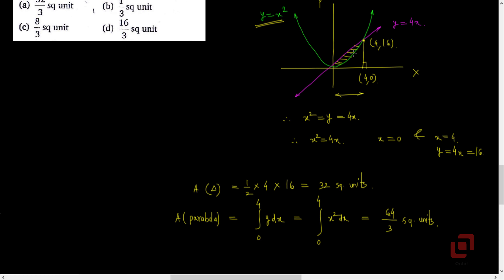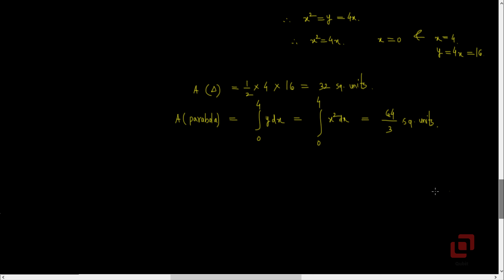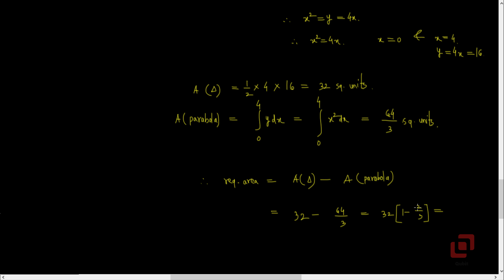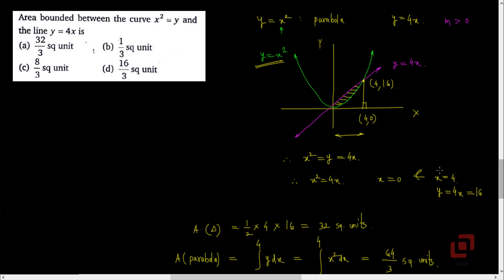The shaded required area is the area of the triangle minus the area bounded by the parabola. Therefore required area equals 32 minus 64 by 3. Taking 32 common gives 32 into (1 minus 2 by 3), which is 32 into 1 by 3, so the required area is 32 by 3 square units. That is option A, so the correct option is A.